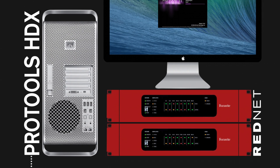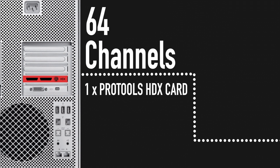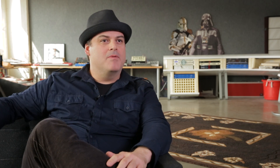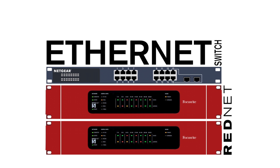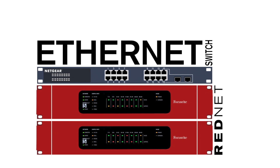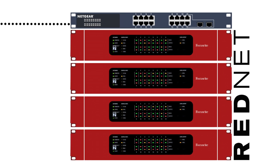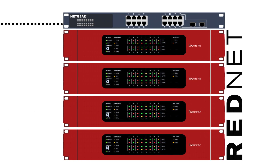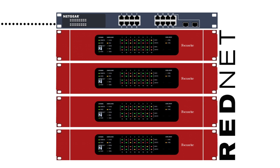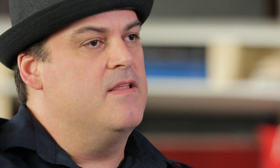I have two RedNet 5s and that allows me to have 64 discrete channels directly into a single HDX card. If I were to work in a traditional method, I'd have to have 64 singular cables feeding from room to room as a minimum. On the Dante network, I have one Ethernet cable that plugs from my Ethernet hub in the back room to an Ethernet hub in the front room, and that hub is laced into my RedNet interfaces, which are my I/O for my devices. That kind of connectivity and portability is what makes the Dante protocol powerful.